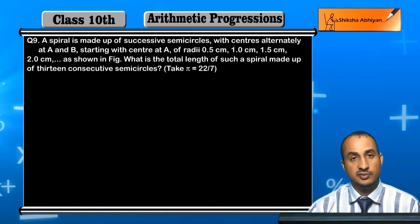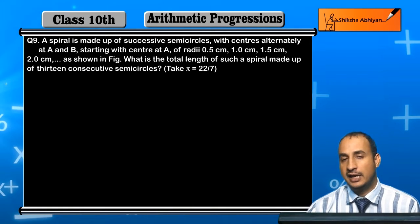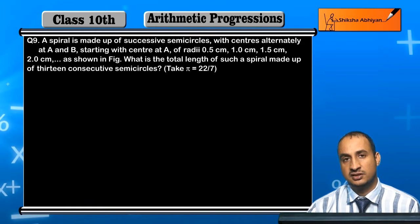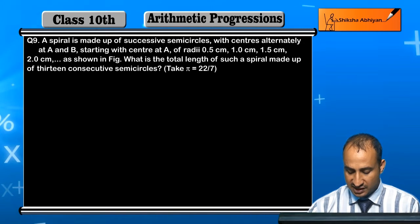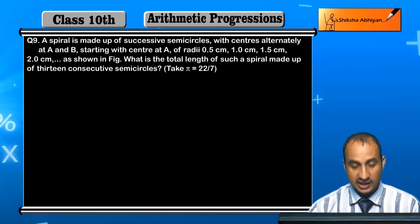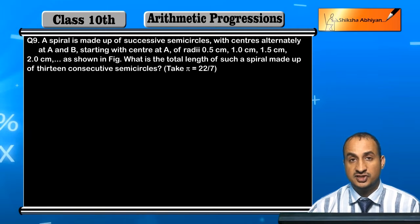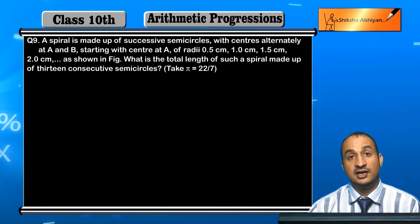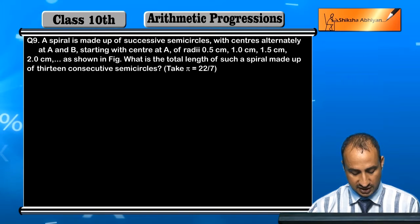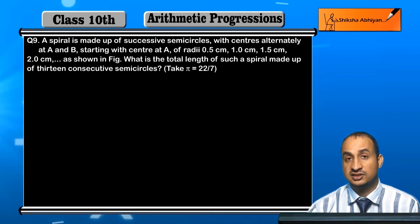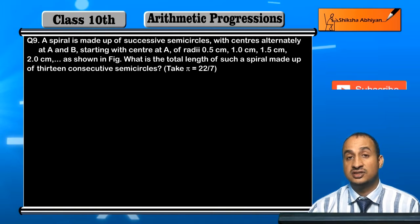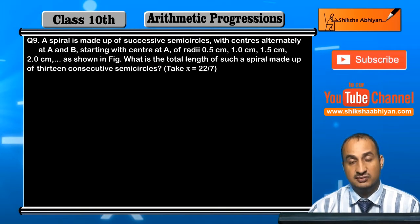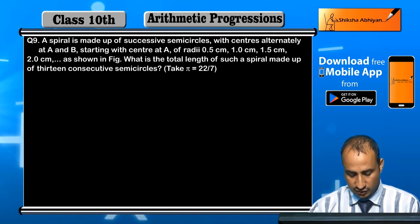Starting with center at A, radius 0.5cm, then radius 1.0cm, then the center is at radius 1.5cm, then the next radius is at center B with semicircle 2.0cm and so on.